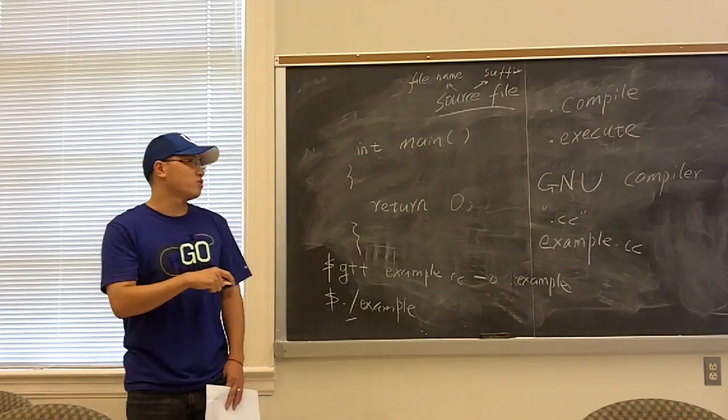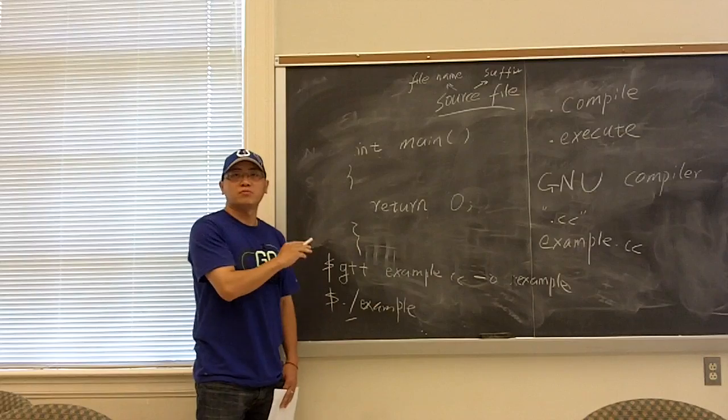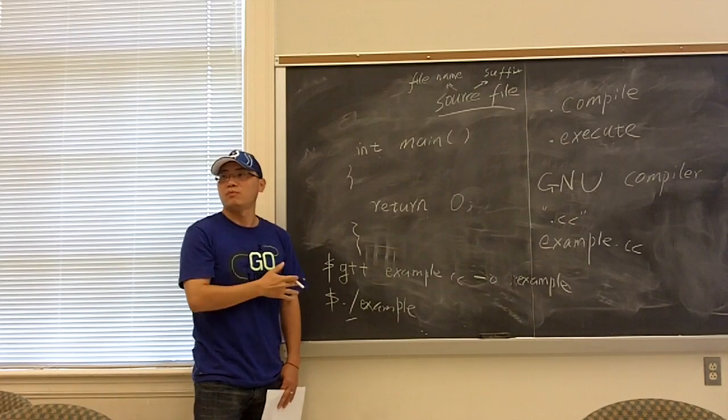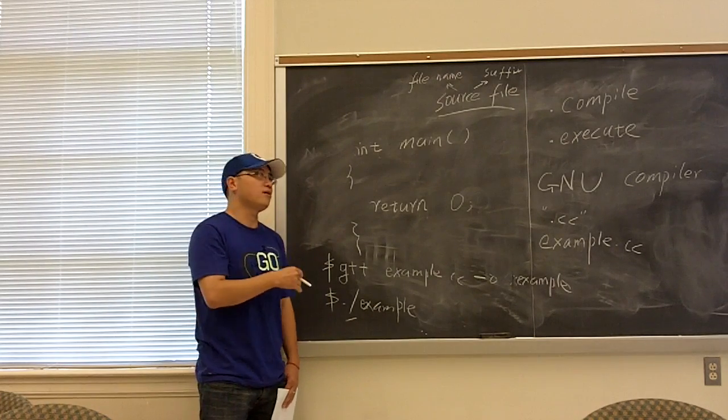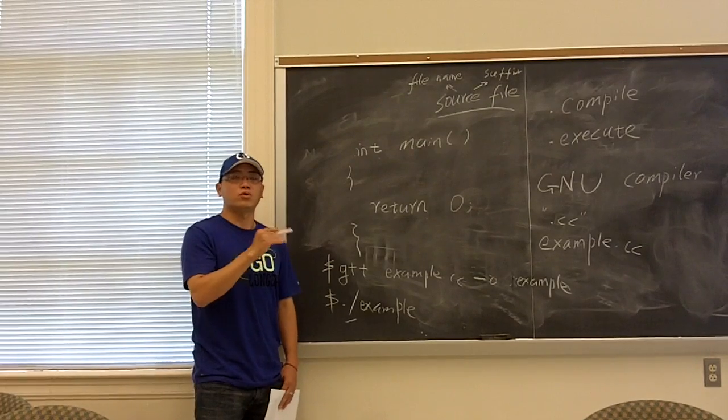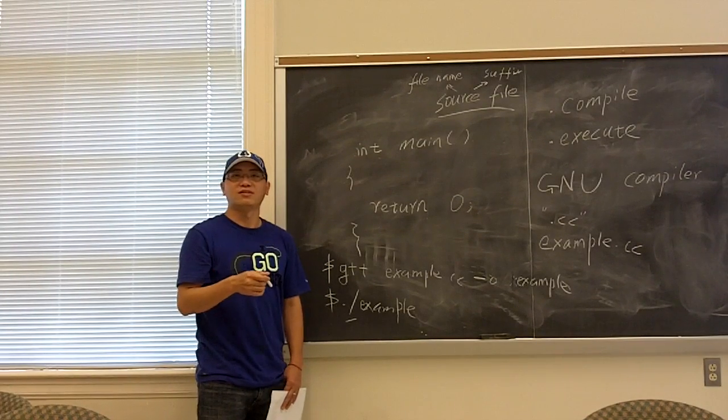So a return value of zero of the main function means the successful completion of the main function. Any other value than zero purely means an error occurred. Okay.